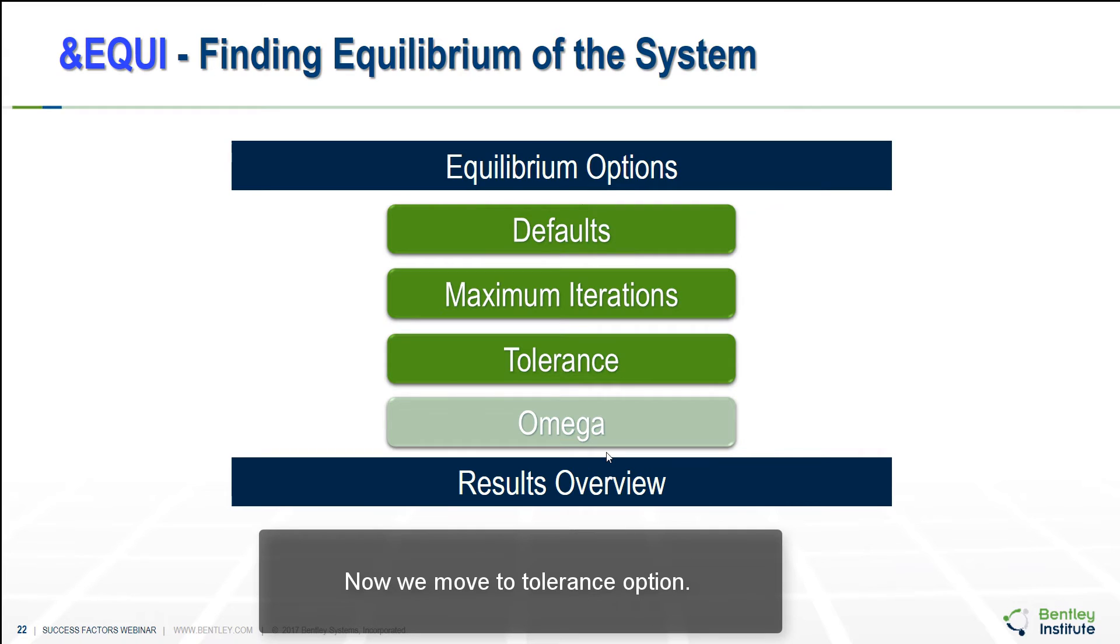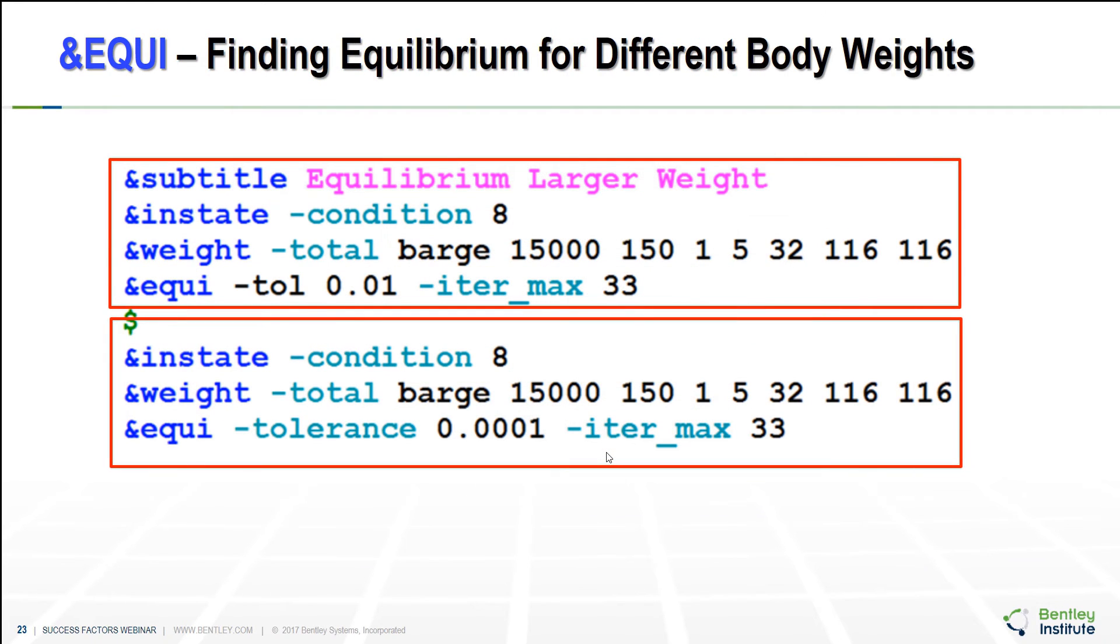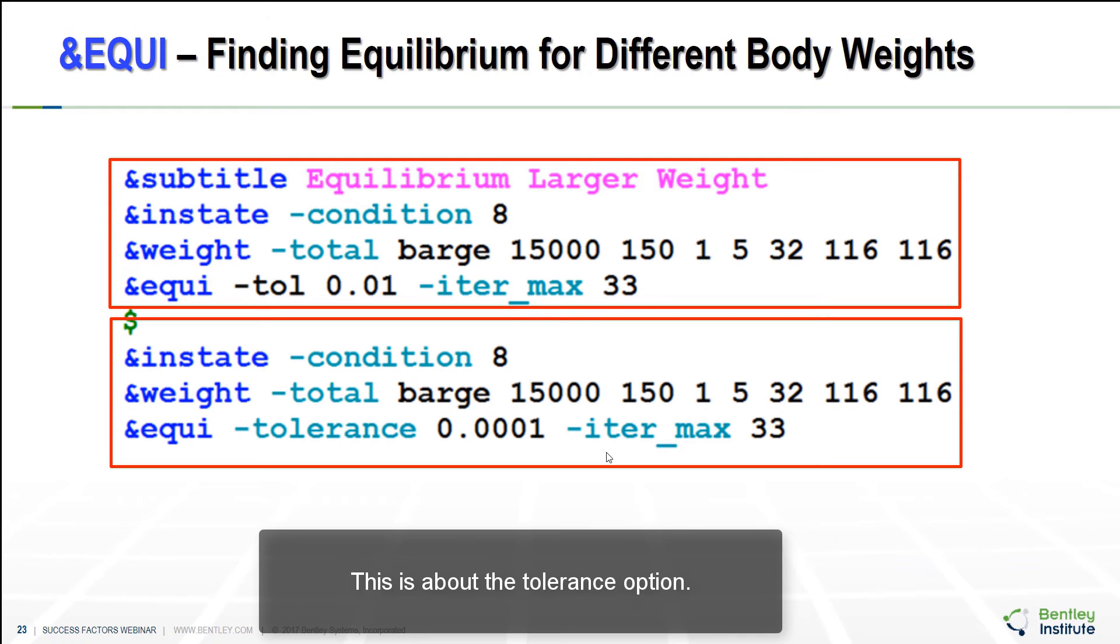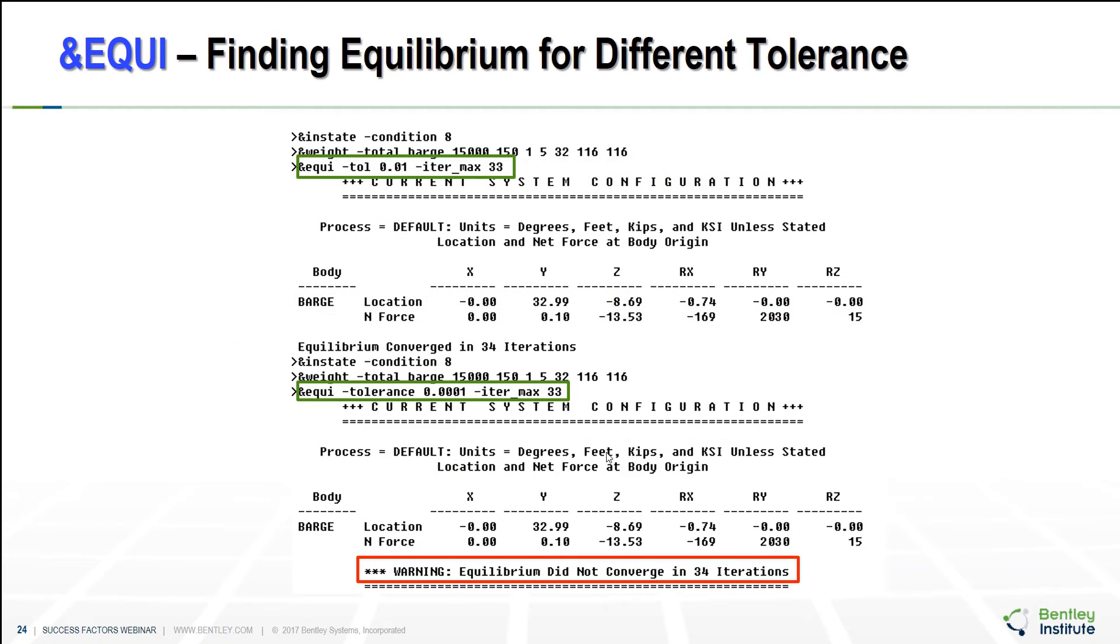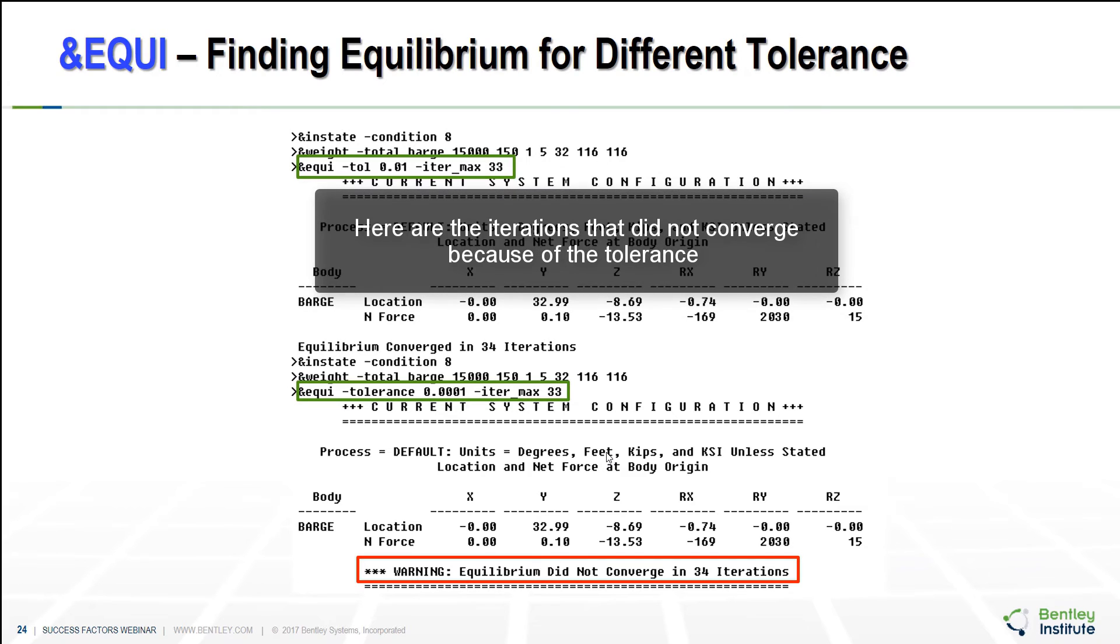We move to tolerance option. This is about the tolerance option. There is the same set of commands. This one will change the tolerance. There is to increase the number of iterations in order for it to converge. The program will stop prematurely as it set up of 33 maximum iterations with the specified tolerance. These two results, the iteration did not converge because of the tolerance or the function evaluation did not allow within the tolerance.